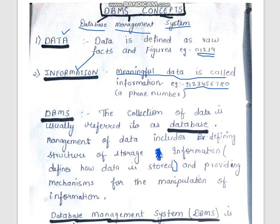So now we understand what DBMS is. Before that, let us understand two words: Database and Management. What does database mean? Database means a collection of interrelated data collected together. The collection of interrelated data is called a database.